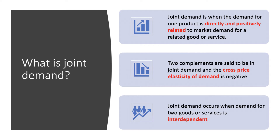Complementary products are in joint demand. The cross-price elasticity of demand for complements is negative: a fall in the price of X will lead to an increase in the demand for X and therefore an increase in the demand for Y, a complementary product. Joint demand happens when the demand for two goods or services is interdependent.